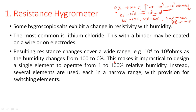This makes it impractical to design a single element to operate from 1 to 100 percent relative humidity. Instead, several elements are used, each covering a narrow range, with provision for switching elements. Depending on the humidity range, the corresponding element is switched in so that the corresponding humidity can be measured.